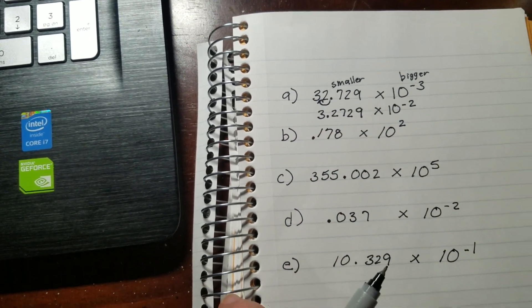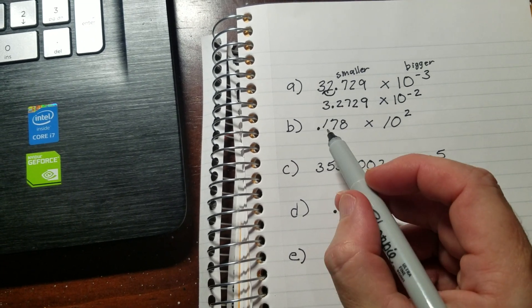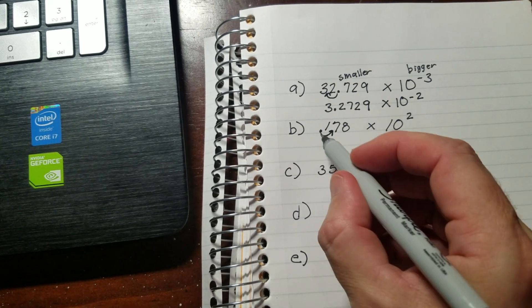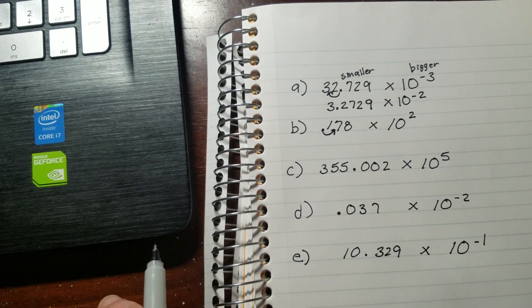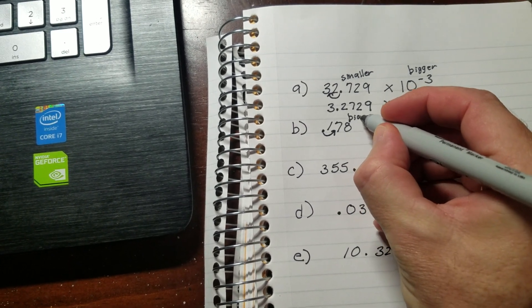Moving along down here to b. So I have 0.178, definitely not in scientific notation. I'm going to have to move the decimal this way. Well, when I did that, if I turned 0.178 into 1.78, I basically made that number bigger.